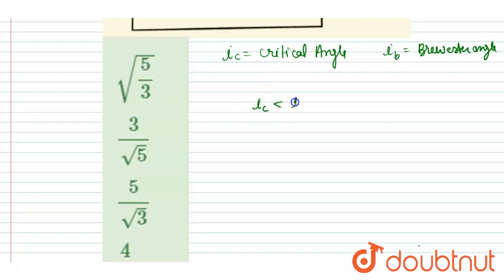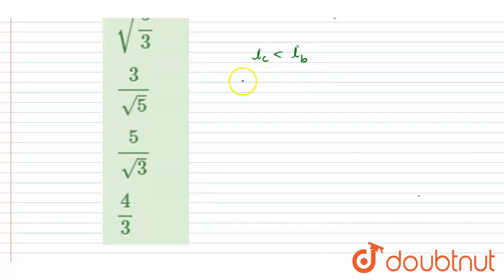Simple. So if I take sine of both sides, I will write. Now see, sine i_c is one by mu, right? You can see here, one by mu. This is the mu, right?